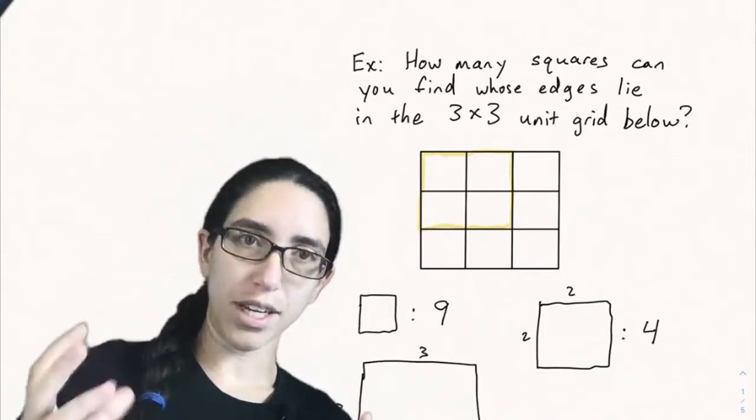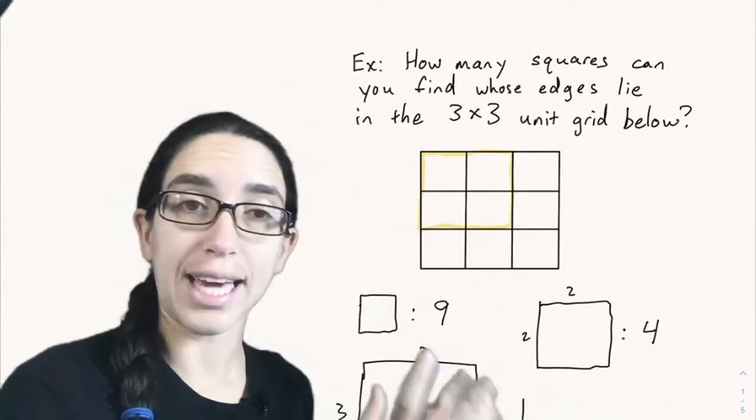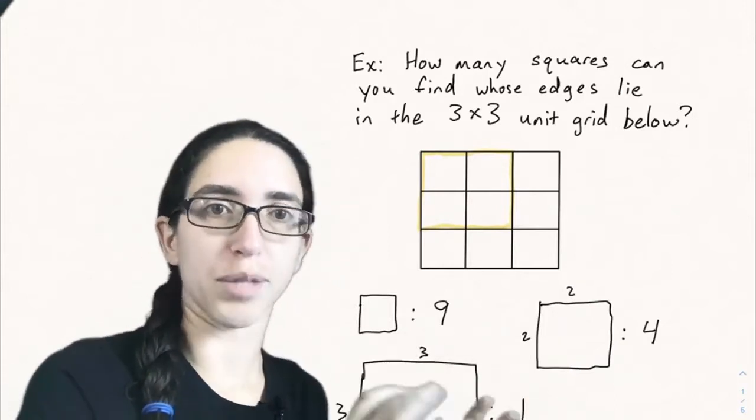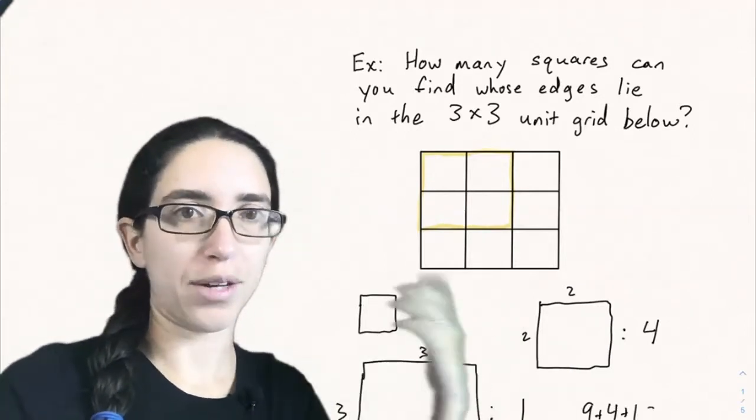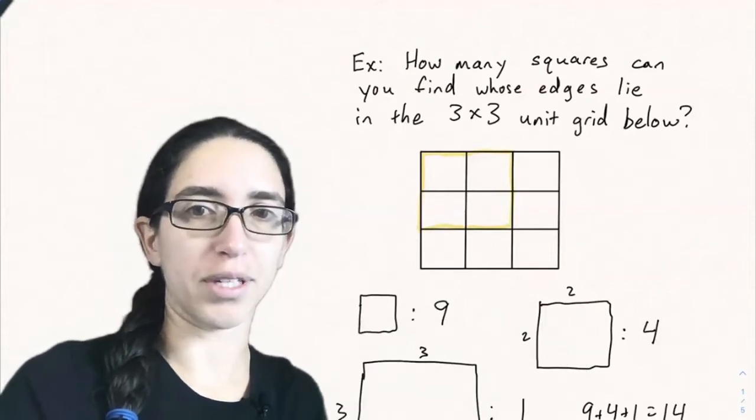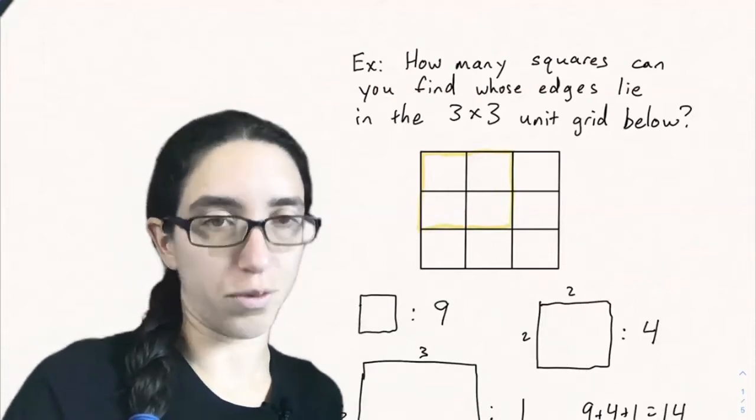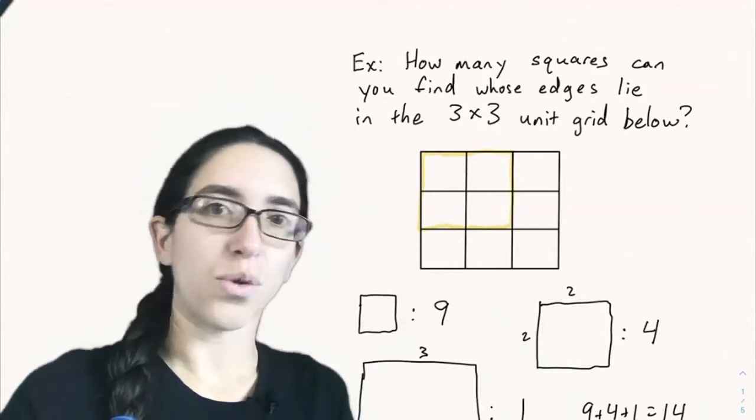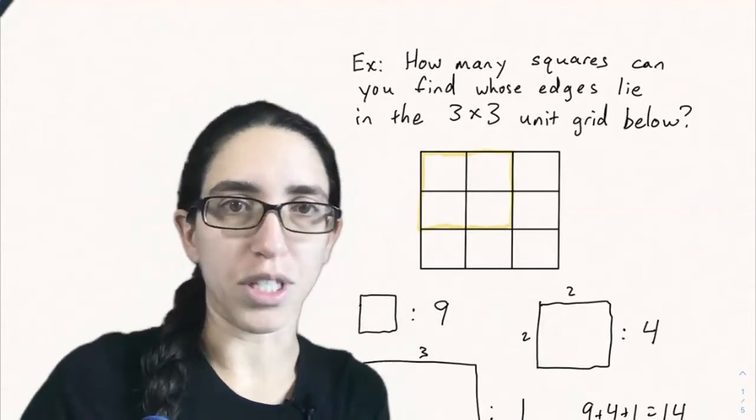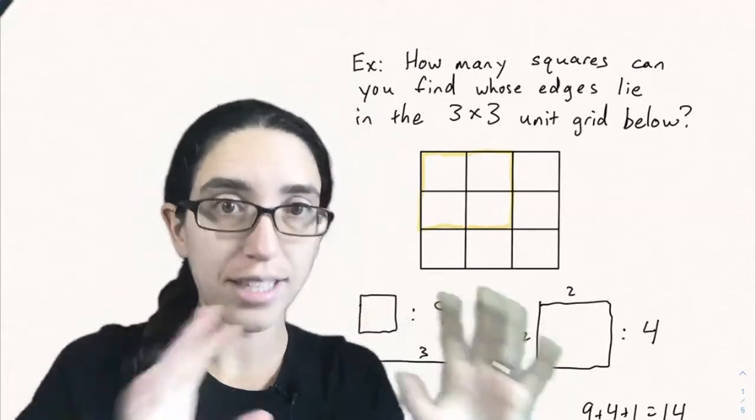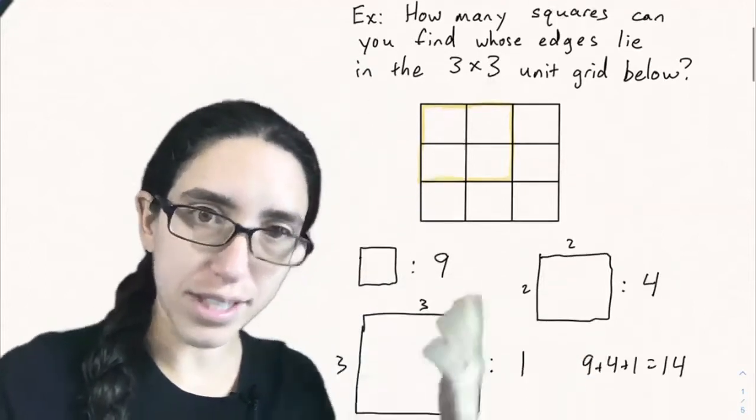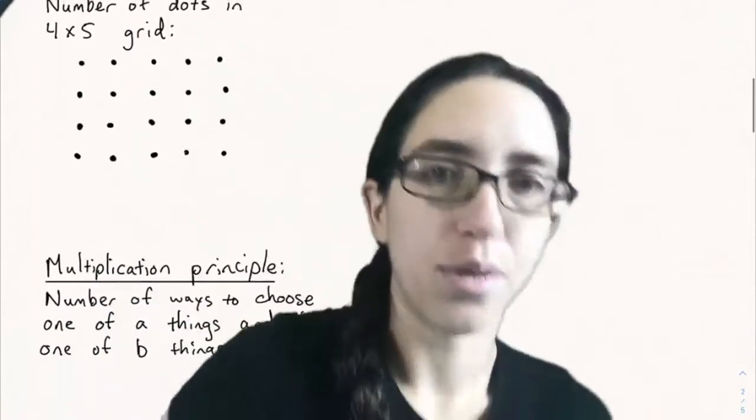So what we've done here is we've split up our counting problem into cases where we sorted the squares by size. And we said each square is either size one, two, or three. And we're counting those cases separately and adding them up to get nine plus four plus one, which is 14. So that's an example of where we use the addition principle in a slightly more complicated context. It's not always obvious what cases you should split your problem up into, but in this case counting them by size was useful.